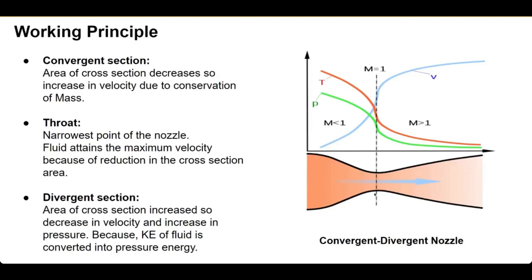According to Bernoulli's principle, there is a decrease in cross-sectional area, which means there is a decrease in pressure energy. Because of the law of conservation of mass, there is going to be an increase in the velocity of the fluid. We reach the throat section, and there is maximum velocity because of the reduction of cross-section. We get maximum velocity of the fluid at the throat section, and then we come to the divergent section where the area is increasing.